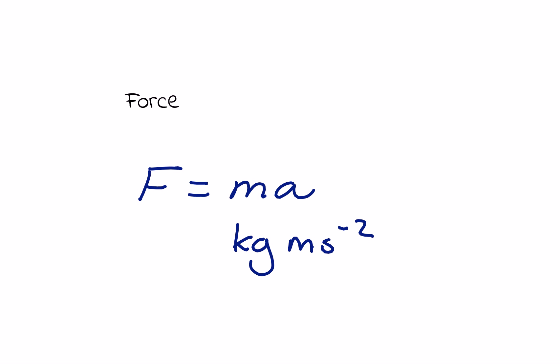But some of these derived units are given special names. For example, force is given the symbol capital N, which is the newton. So what we can say is that one newton is equivalent to one kilogram meter per second squared.